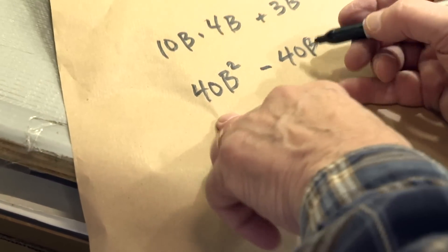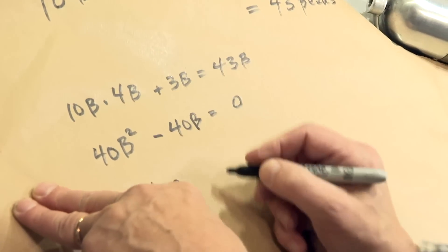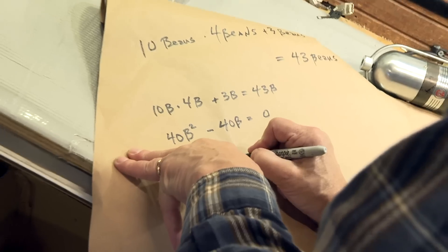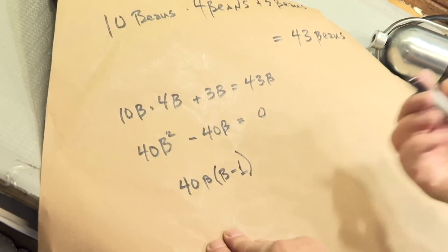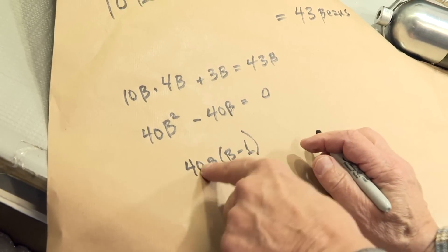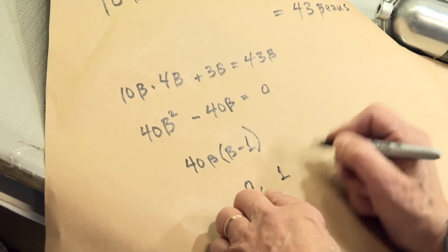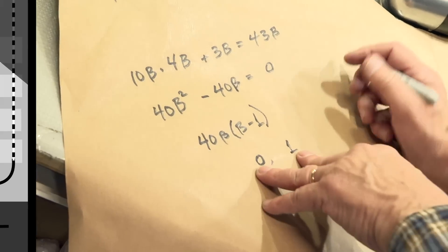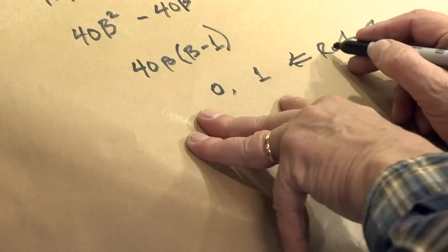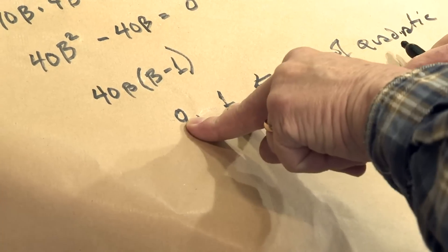So that's an interesting equation — let's factor it. If you factor it, it graphs into a parabola and it factors into 40B times B minus one, which says it's got real roots. It's got a root at zero — 40 times zero times zero minus one. Also has a root at one — 40 times one minus one. So zero and one are the roots of this quadratic. They're the values of B. That's what a bean is — and that's the solution to this Nescafe equation.